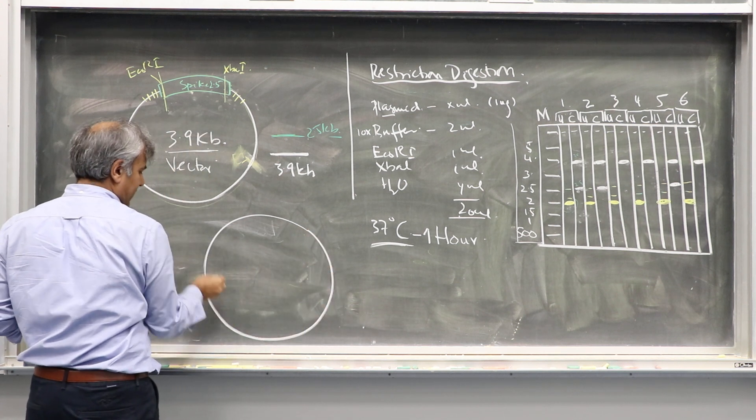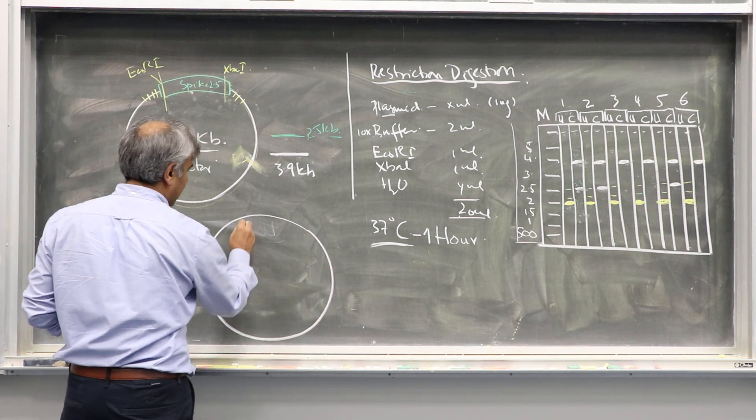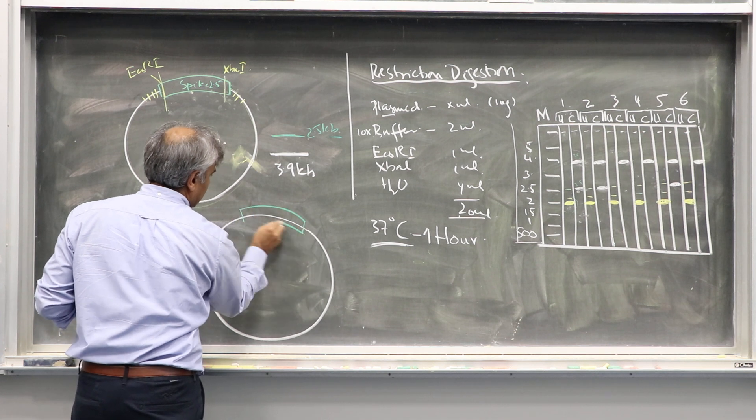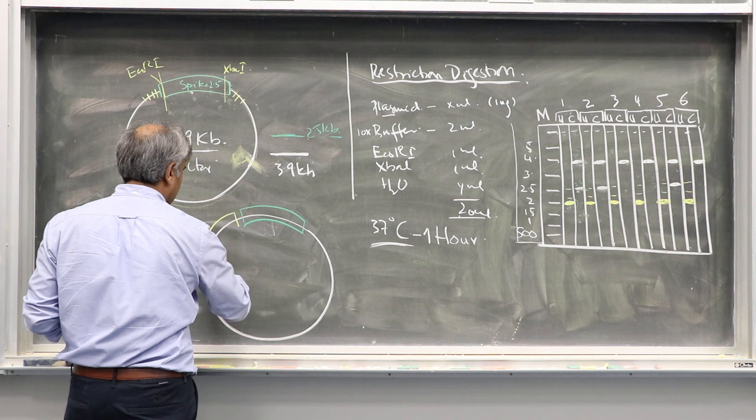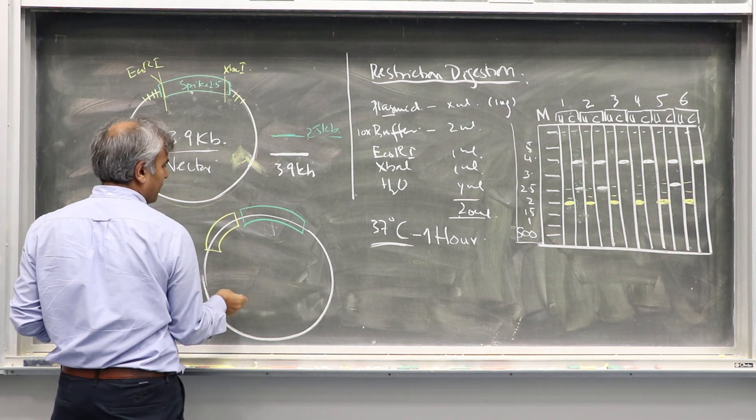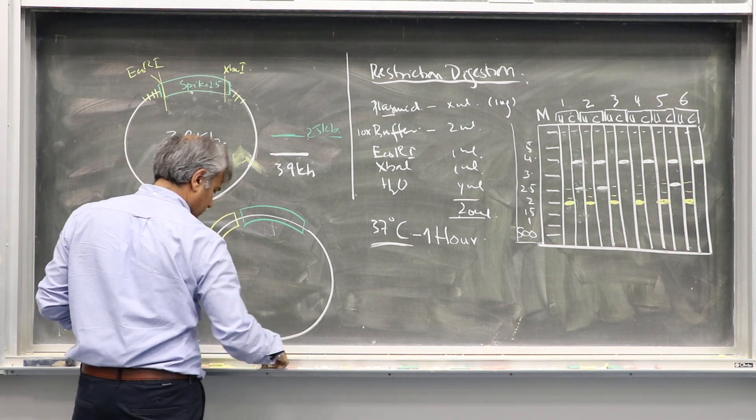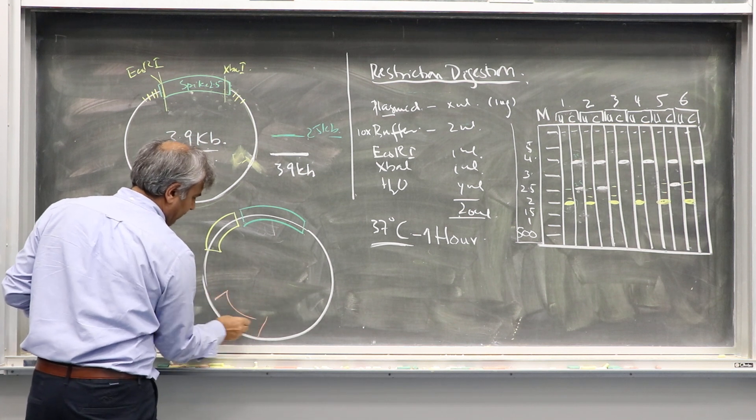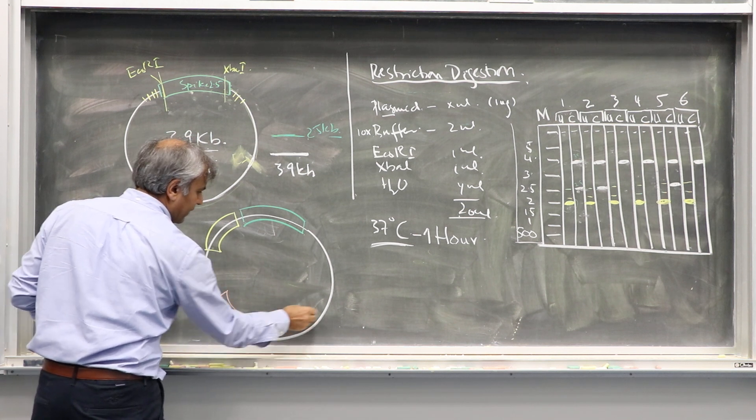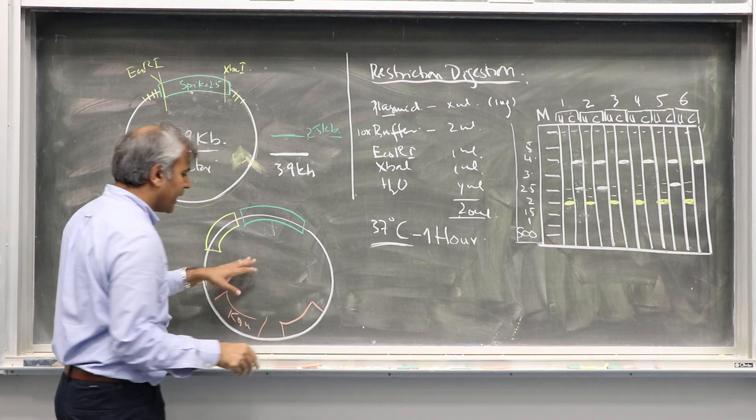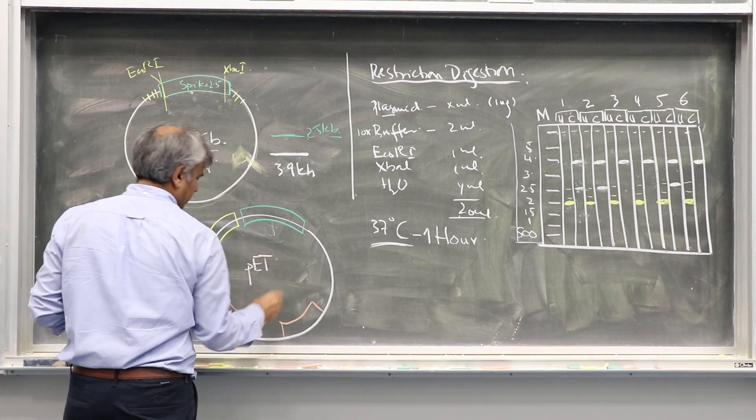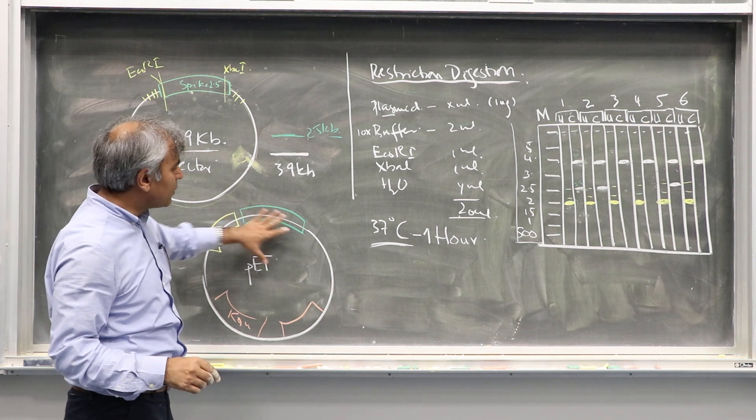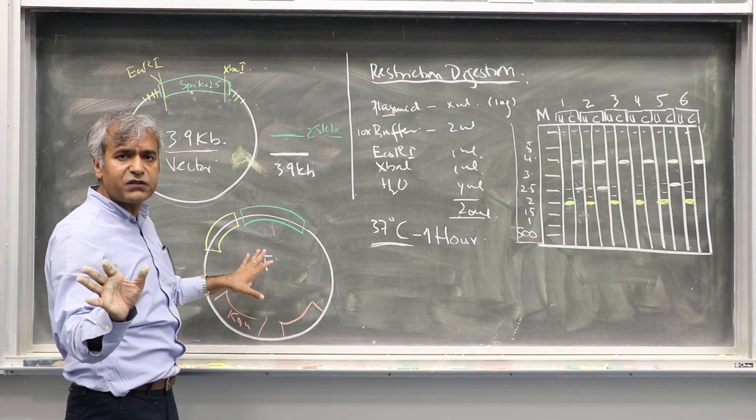After the subcloning of spike from here in the PET vector, what we will see, we will have our spike gene. And I told you there is lact-inducible promoter. There is ampicillin or kanamycin, etc. You should go and read the PET vectors.